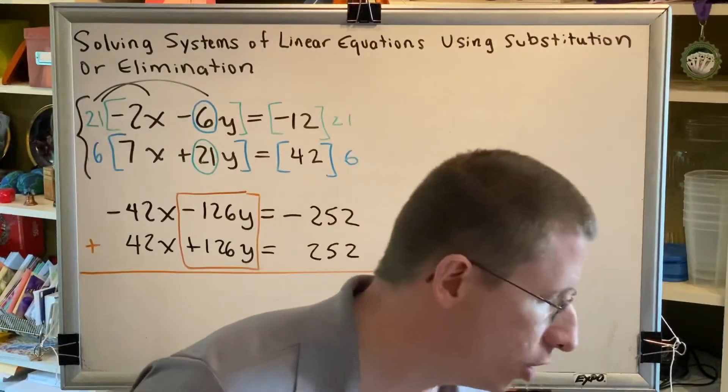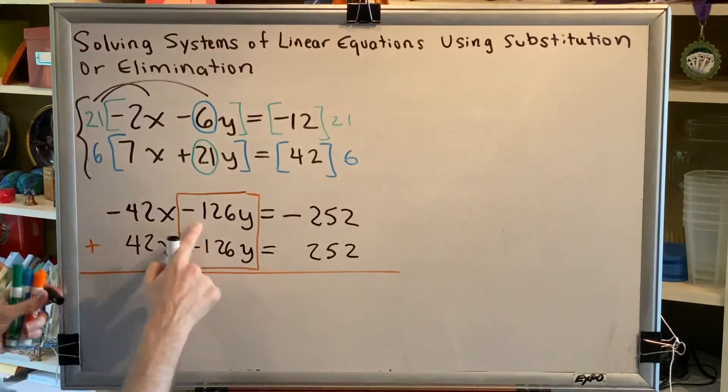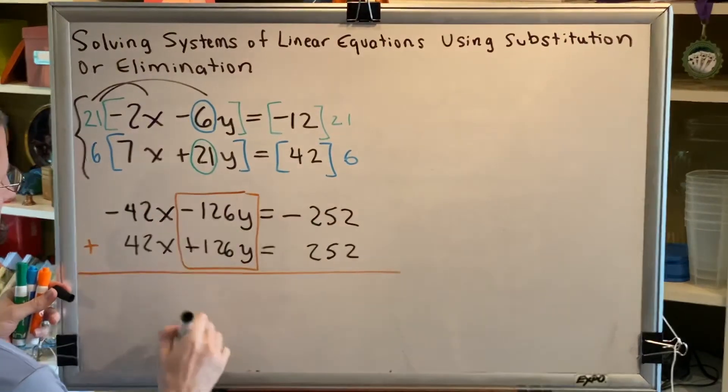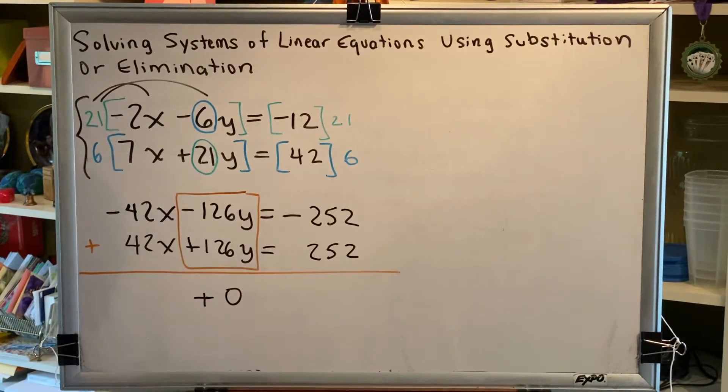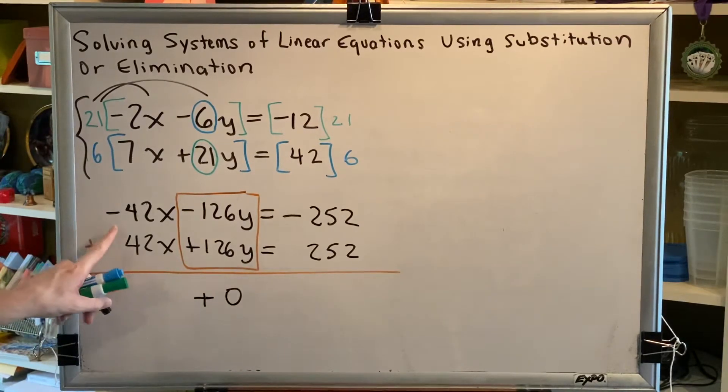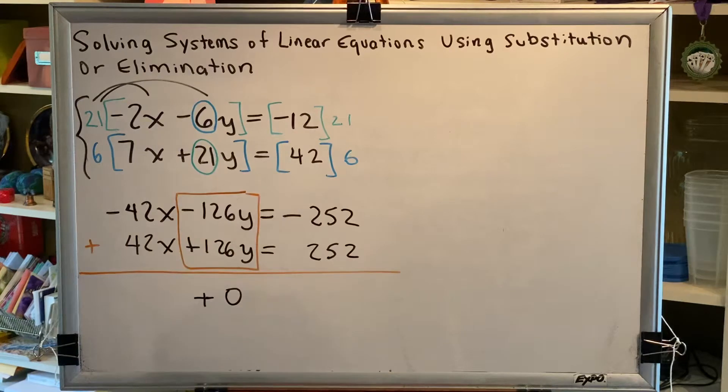So now we can add our two equations together. So negative 126y plus 126y is 0. Now we just have to work with the other pieces. Well, you might have noticed that we actually got opposites for the x's and for the constant terms in our equation as well. We weren't necessarily trying to achieve that, and yet that was the result.